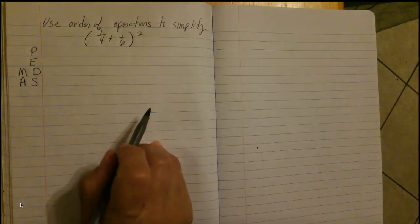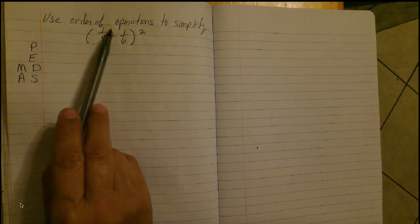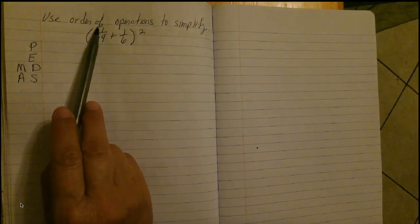Using order of operations to simplify, in parenthesis, one-fourth plus one-sixth quantity squared.